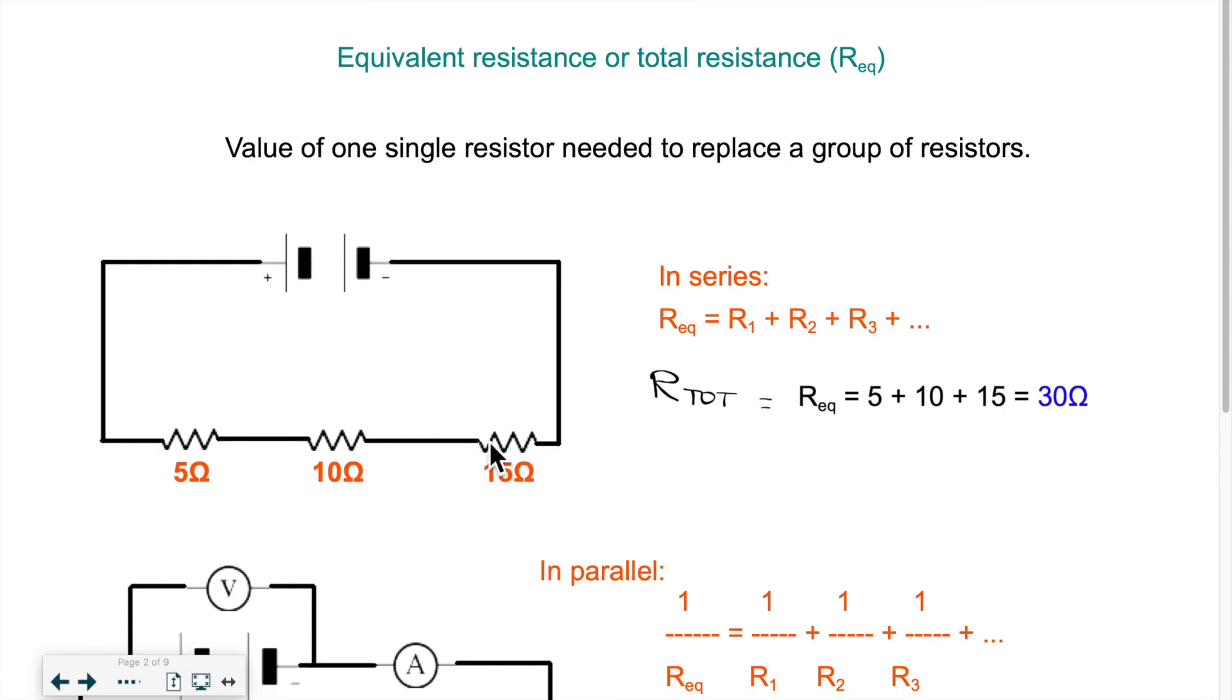So I could take away all three resistors and only put one resistor in this whole setup, as long as my one resistor has a value of 30 ohms, the setup would be exactly the same, would accomplish the same work as having three separate resistors of values 5, 10, and 15. So when we have a circuit in series, that's the way we do it.